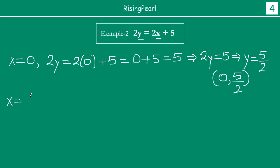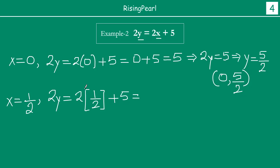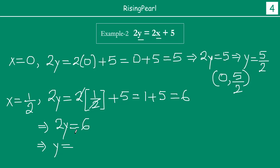Similarly, let us write x equal to 1 by 2. Then 2y equals 2 times 1/2 plus 5. The 2 and 2 cancel, giving 1 plus 5, which is 6. So 2y equals 6, and dividing both sides by 2, y equals 6 by 2, which is 3. So for x equal to 1/2 and y equal to 3, this is again a solution for this equation.